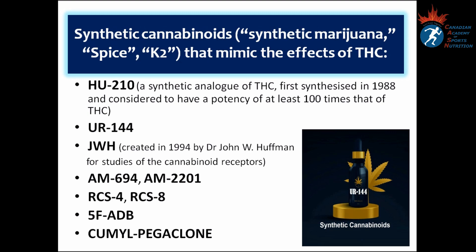There is a long list of synthetic cannabinoids and here are the famous ones. HU-210 is a synthetic analog of THC — it was first synthesized in 1988 and is considered to have a potency of at least 100 times that of THC. UR-144 and JWH were created in 1994 by Dr. John W. Hoffman for studies of cannabinoid receptors. Others include AM694, AM2201, RCS4, RCS8, 5F-ADB, and the last one is called Cumyl-Pegaclone, which emerged in late 2016 on the German drug market and in 2019 Sweden categorized it as a narcotic substance.